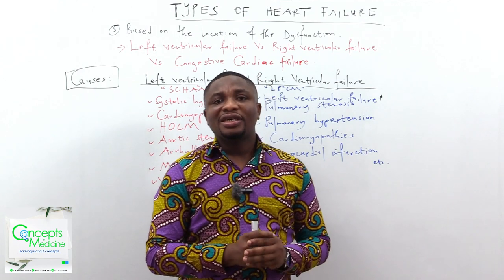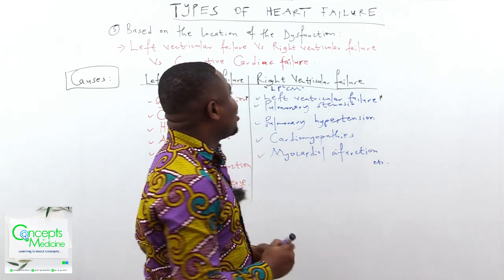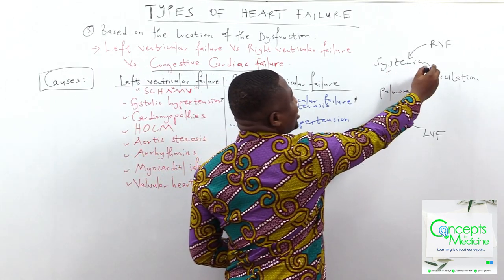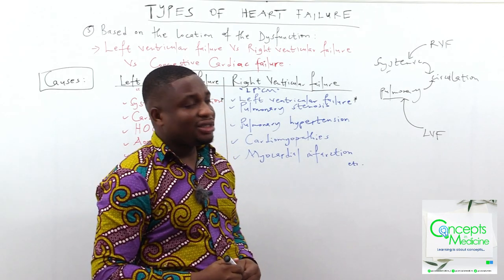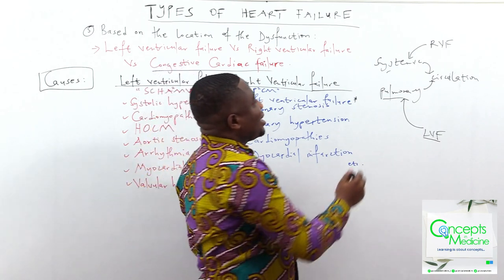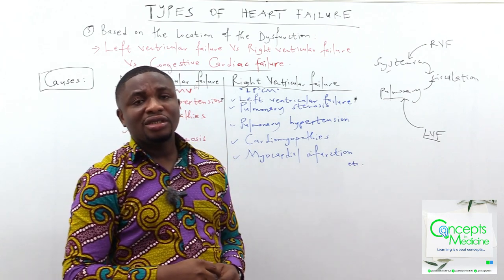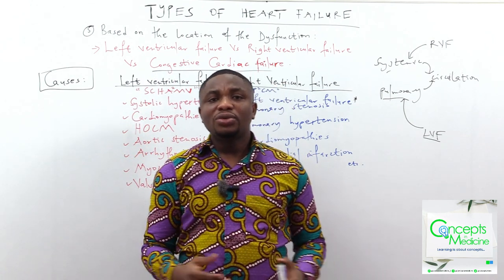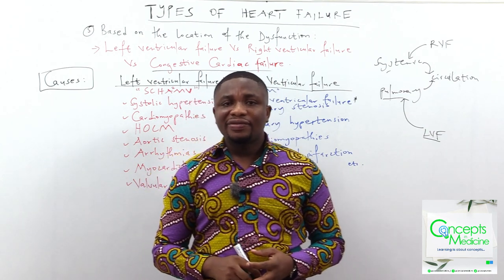When left ventricular failure and right ventricular failure coexist at the same time, we call it congestive cardiac failure. This is because there is congestion in both the systemic and pulmonary circulations: left ventricular failure gives rise to pulmonary congestion, and right ventricular failure gives rise to systemic congestion. Both systems of circulation are congested — hence the name congestive cardiac failure.